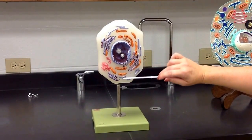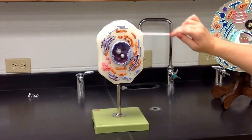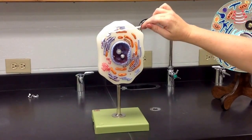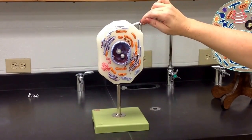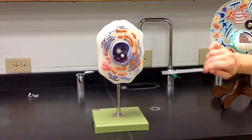Then over here you have your smooth endoplasmic reticulum, which is the same as the rough, but it doesn't have the ribosomes on it. So that is your smooth endoplasmic reticulum.